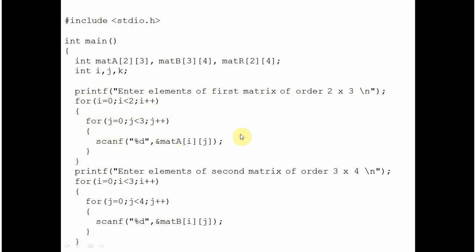i represents row and j represents column. You are entering values in row-major form — entering values for the first row while i is 0. In almost all programming languages, the index begins with 0, so the 0th row means the first row in our language. When i becomes 1, values are entered for the second row. After taking the values of the first matrix, you ask the user to enter elements for the second matrix of order 3 by 4. i goes from 0 to less than 3, and j represents the column — the same nested loops run again.